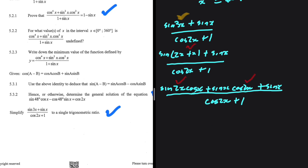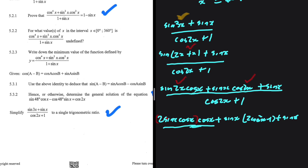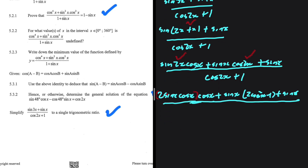We're going to change sin2x to 2sinx·cosx, and we are still multiplying by cosx — so we have cosx right here — plus sinx·cos2x. Now we change cos2x to 2cos²x − 1, plus sinx. Everything divided by — and now we change the denominator: cos2x equals 2cos²x − 1, and then we have plus 1 right here, so minus 1 plus 1 gives us 0.